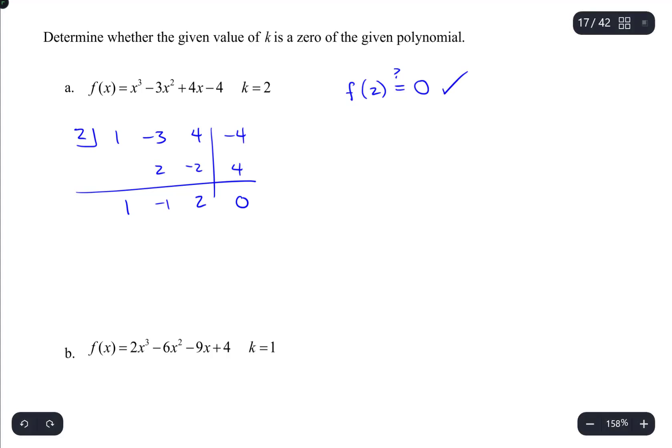And that last column does add to zero. So it checks out. That tells me that k equals 2 is a zero of f(x).